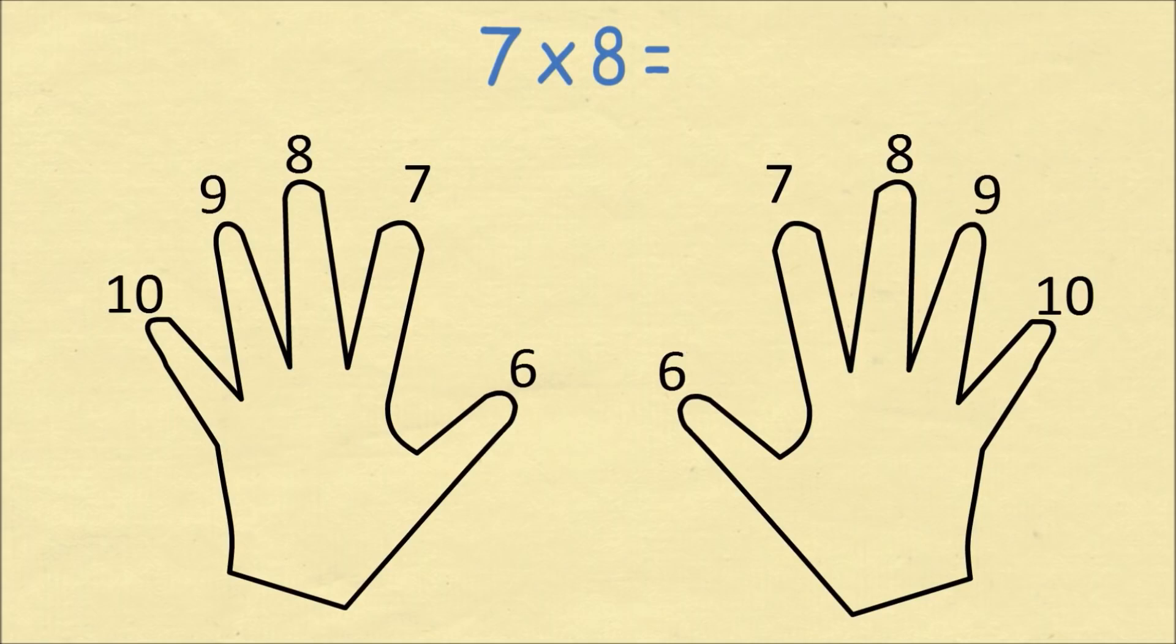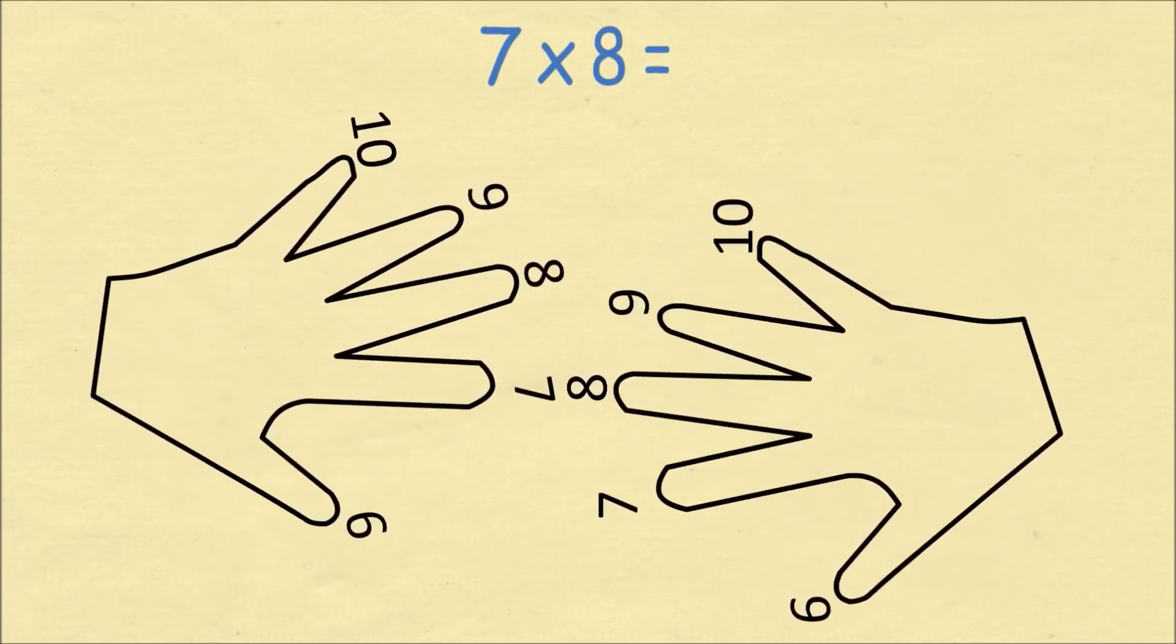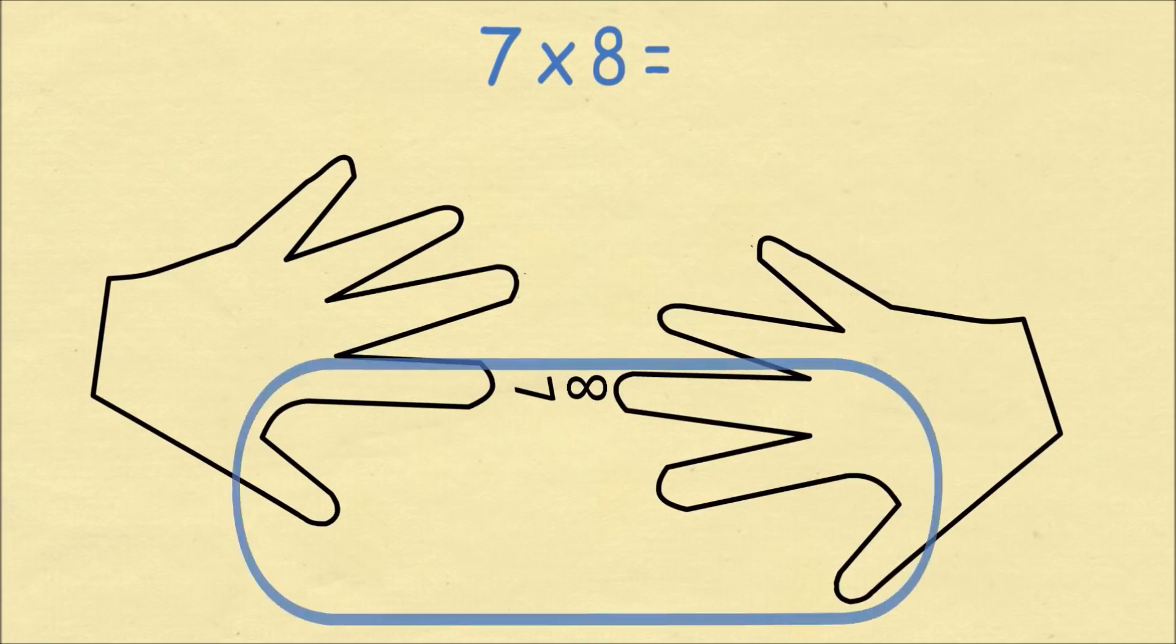Let's do the problem of 7 times 8. We'll rotate our left hand so we have one finger being 7, and we'll rotate our right hand to line up the number 8. Now we'll count the numbers of fingers that are below the two fingers which are touching. We have two fingers on the left hand and three fingers on the right hand, which is a total of five fingers. This becomes the tens digit of our answer. The fingers that are above the touch fingers are three on the left hand and two on the right hand. We multiply these, 3 times 2 is 6, and that gets us our answer of 56.